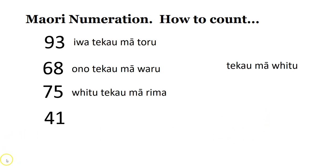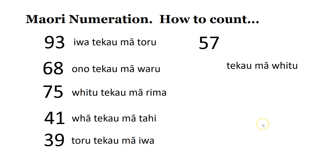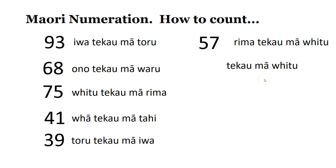Number forty-one — whā te kau ma tahi, so four tens, add one. Thirty-nine — toru te kau ma iwa, so three tens, add nine. Fifty-seven — rima te kau ma fitu, five tens, add seven. Te kau ma fitu — what's that in English? It's seventeen — te kau is one ten, ma fitu, add seven.